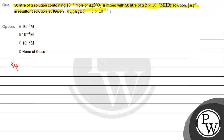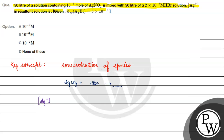The key concept for this question is the concentration of species. First, we will see whether precipitation will occur or not. We will compare the ionic product with the solubility product. The ionic product will be the concentration of Ag⁺ into concentration of Br⁻.